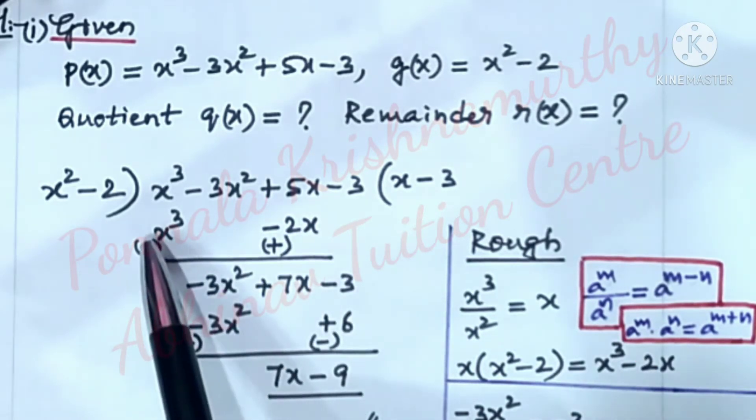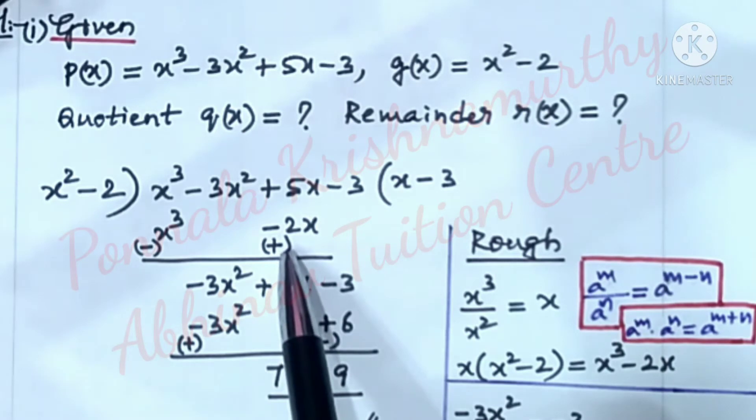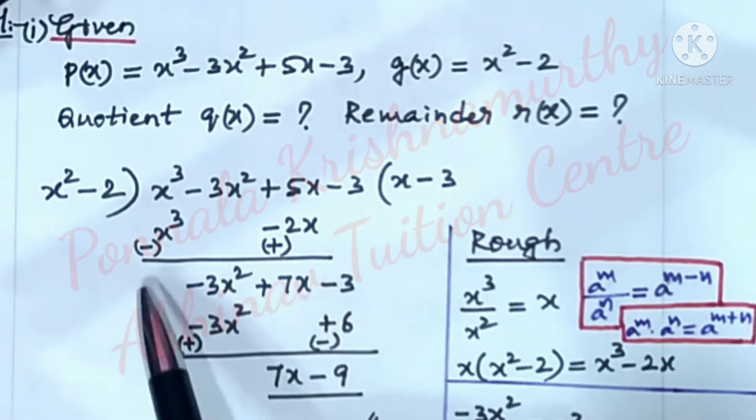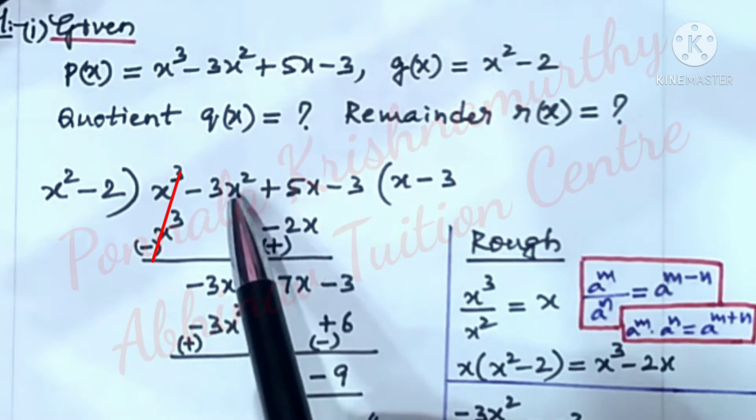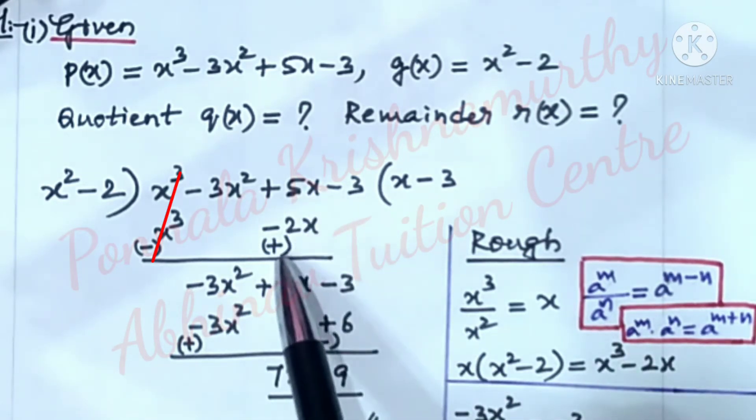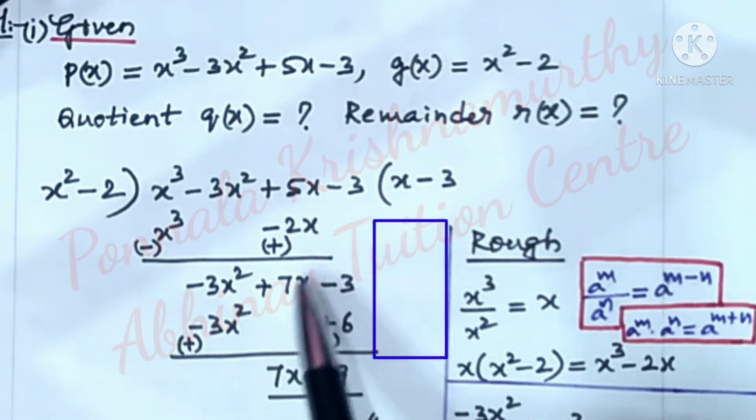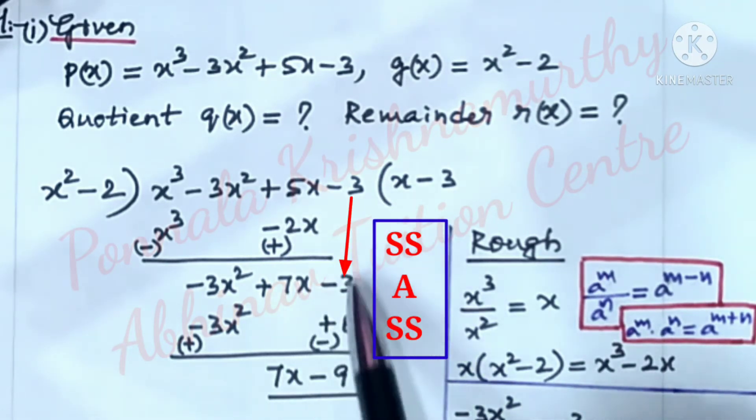Now, change the signs. This plus into minus and minus into plus. Changes the signs. Now, these two are cancelled. Now, -3x² and this is +5x + 2x. Same signs, addition, same sign. It becomes +7x - 3.